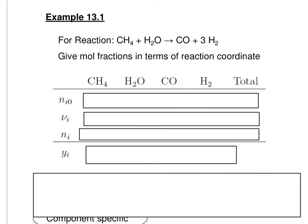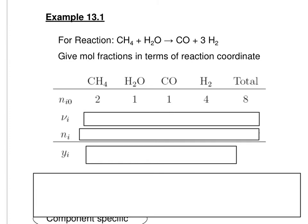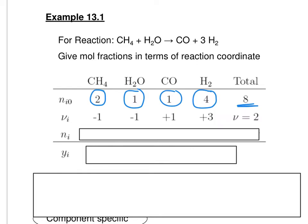In Example 13.1 in Smith, Van Ness and Abbott, the reactants are not fed to the reactor in stoichiometric amounts. Setting up our stoichiometric table, we consider all components and the number of moles initially present as stated by the example: 2 moles of methane, 1 mole of water, 1 mole of carbon monoxide, and 4 moles of hydrogen, giving a total of 8 moles at the initial state. Note that even though we write this as reactants going to products, since some components written as products are already present, the reaction might actually take place in the opposite direction. We write as we read from left to right.